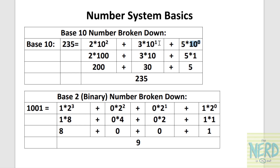This is the ones digit, 10 to the zero. This is the tens digit, 10 to the first. This is the hundreds digit, 10 to the second. The binary numbering system works the same way, but we only have two possible digits: zero and one. So each binary digit, or bit, is a higher power of 2. Let's look at the number 1001 in binary and see how we convert that to base 10 in theory. I'm going to show you the shortcut way, but let's understand the theory first.